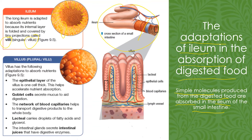Villus has the following adaptations to absorb nutrients efficiently. The epithelial cell of the villus — meaning the outer layer of the villus — is only one cell thick. It is one cell thick so that nutrient absorption will happen at a faster rate.